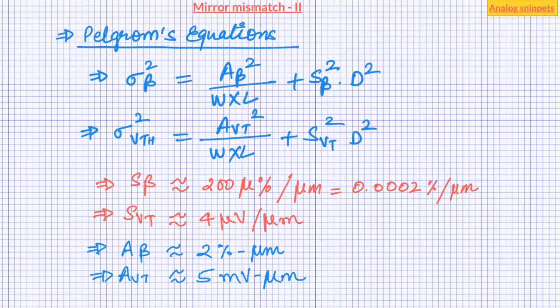That is the reason we can practically ignore this spacing term for very closely spaced devices. But if two devices are a few thousands of micrometers apart, or a few millimeters apart, then these terms start to affect the matching properties. That is why it is not often a good idea to have current mirrors with branches distributed across the whole chip. So on that note, let's get back to current mirrors.